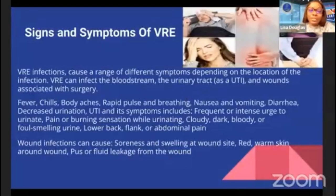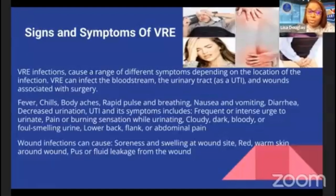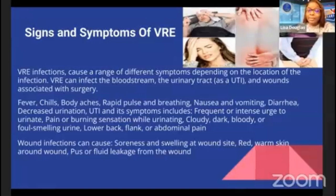VRE infections cause a range of different symptoms depending on the location of the infection. VRE can affect the bloodstream, the urinary tract, and wounds associated with surgery. People may have fever, chills, body aches, rapid pulse and breathing, nausea and vomiting, diarrhea, and decreased urination.